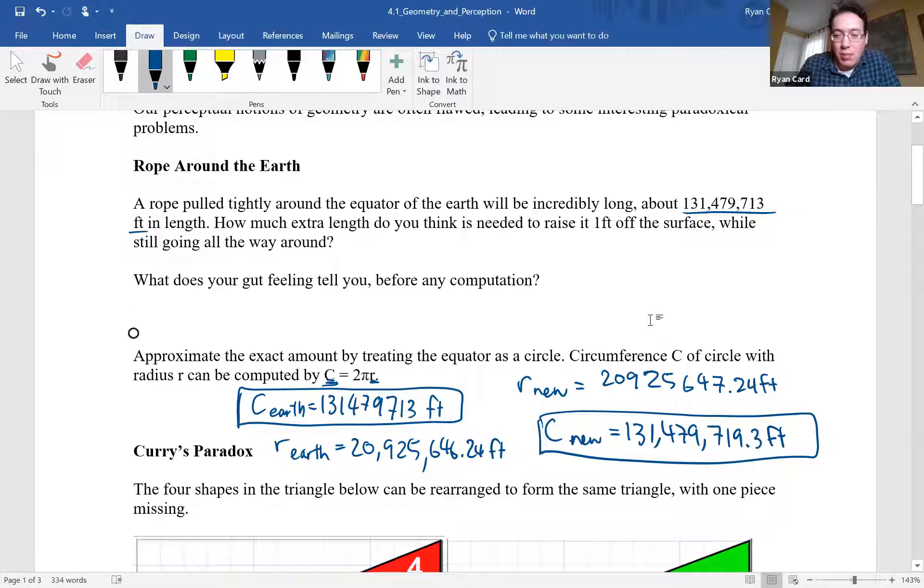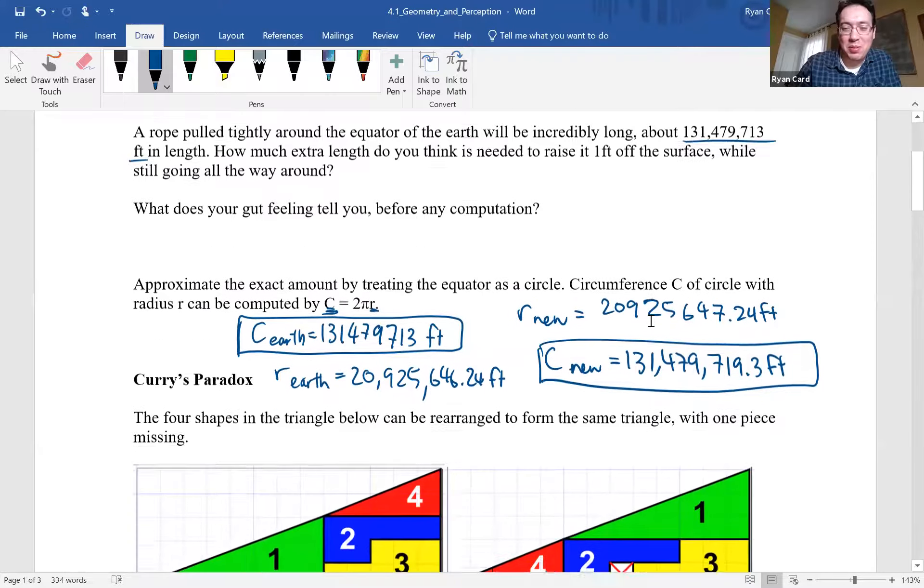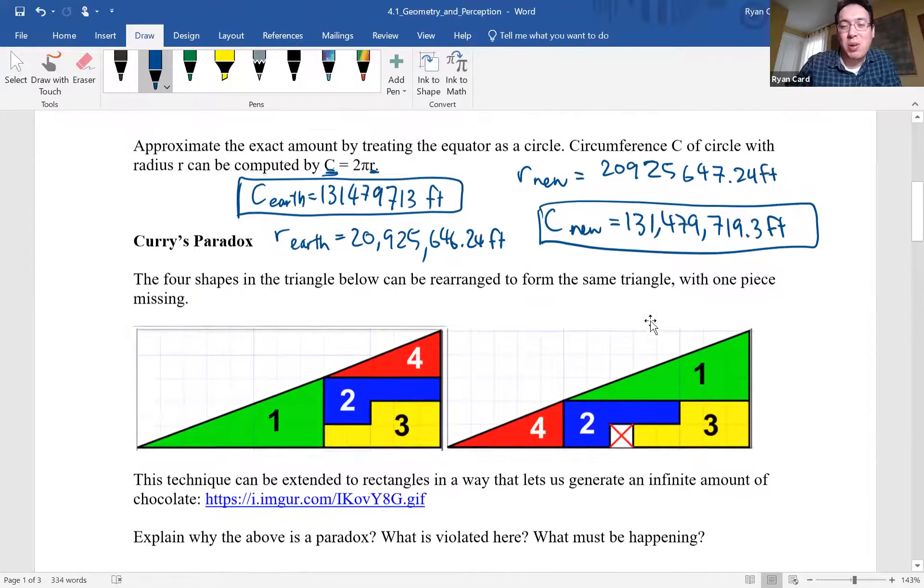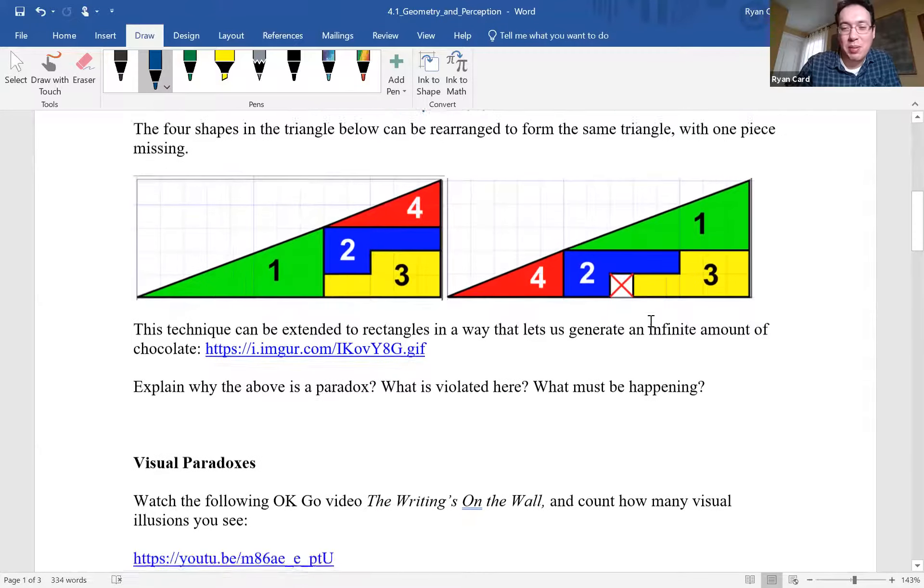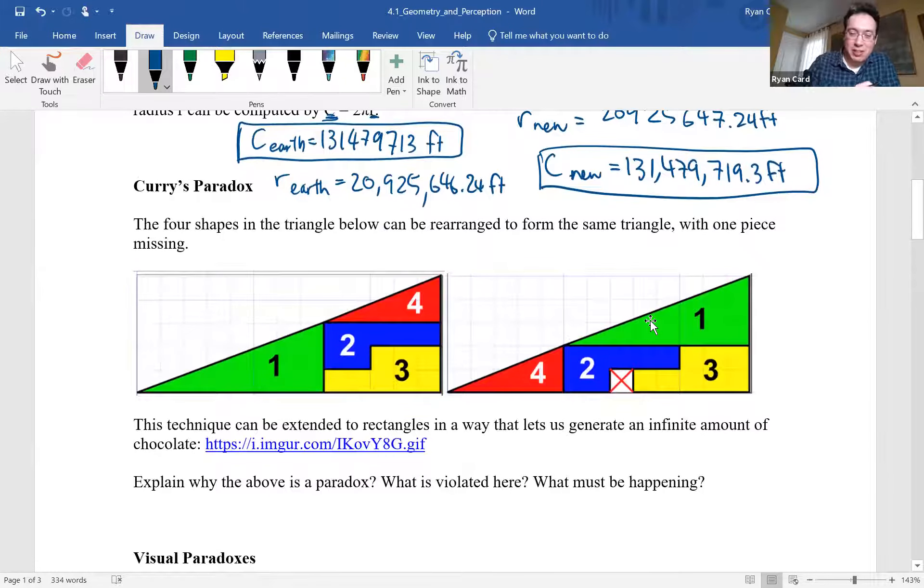Good job if you knew that by gut feeling beforehand. But I think most people, their initial guess is much, much larger because Earth is a large thing. It feels like you'd have to add much more to increase the radius. But it turns out it's actually not that much. It's a little over six feet. I hope you had fun with that one. I think there's a homework question that's close to that about going around the equator, the sun.